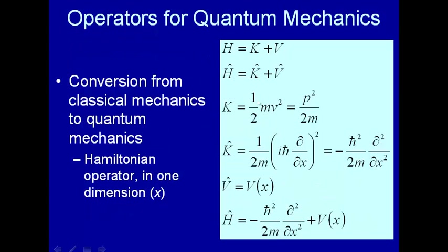So now we know something about operators. How do you go from a description in classical mechanics to a description in quantum mechanics? Well, here's the recipe. Here's the classical Hamiltonian, which is the sum of kinetic energy plus potential energy. All you do is change the Hamiltonian from classical into the quantum Hamiltonian by making it into an operator — you take the kinetic energy and translate it into a kinetic energy operator, and the potential into a potential operator.